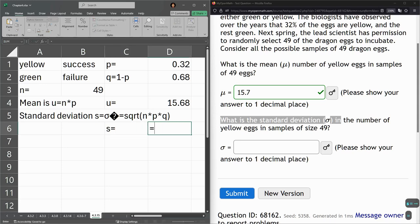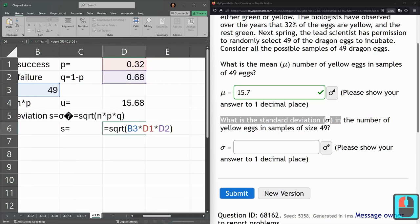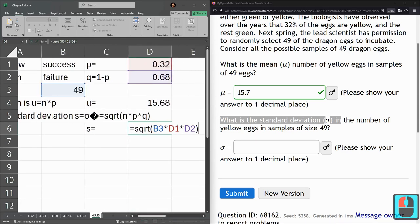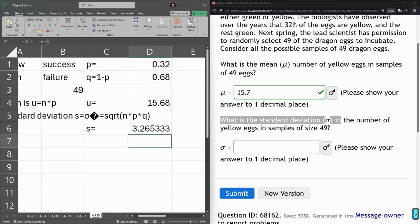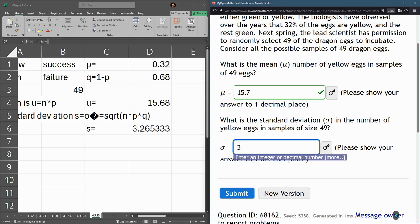So we've got to use the square root function. So we're using σ. So in Excel, sqrt is square root. Now it's n times p times q. n times p times q. And I'll move this over a little bit. There we go. So again, you've got to multiply n, p, and q together and square root it. And this is one decimal place again, so that'll be 3.3.